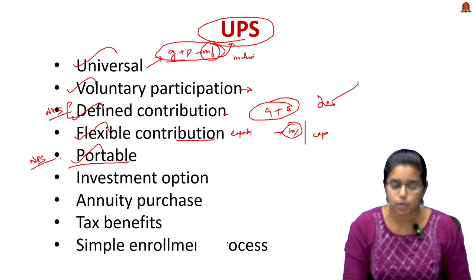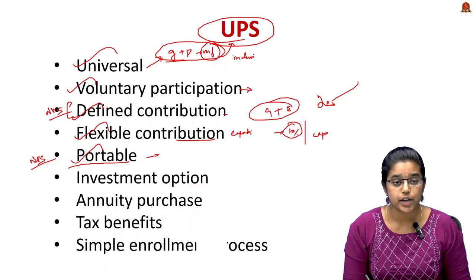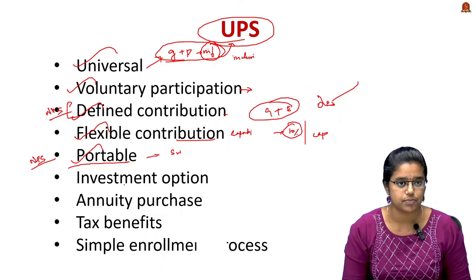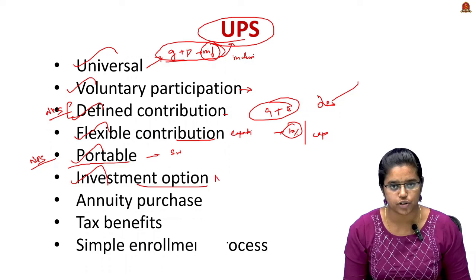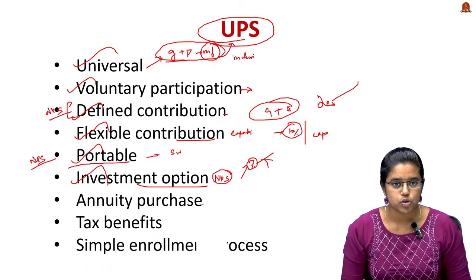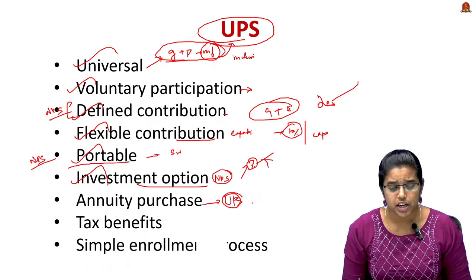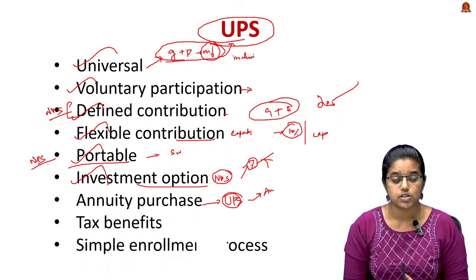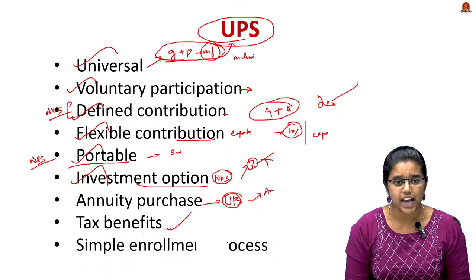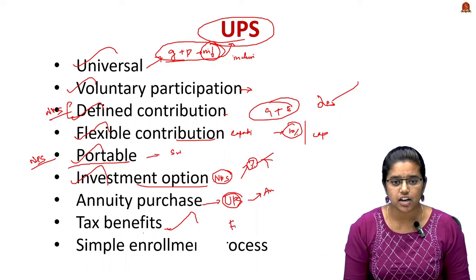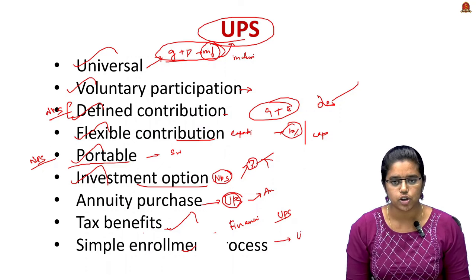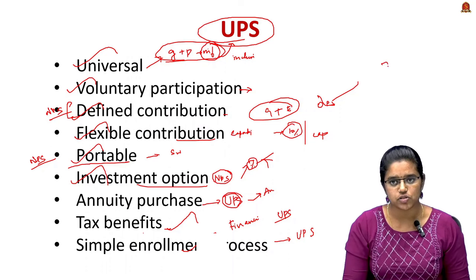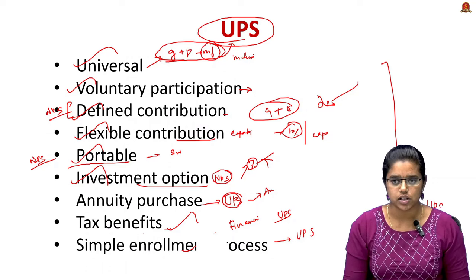Fifth, the UPS is portable — the subscriber can continue with the same account even after switching jobs or sectors. Investment options are similar to the NPS, with the subscriber deciding what proportion to invest in corporate and government bonds. Subscribers can also purchase an annuity with a portion of their amount. There are also tax benefits — financial incentives for investing in the UPS — and a simple enrollment process.